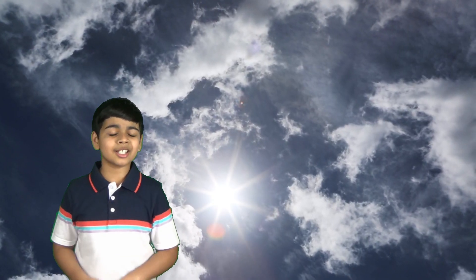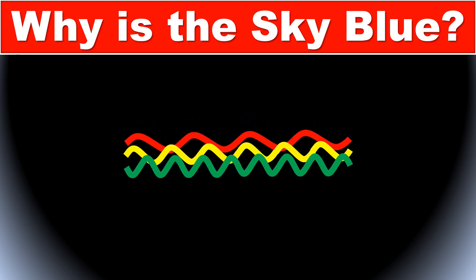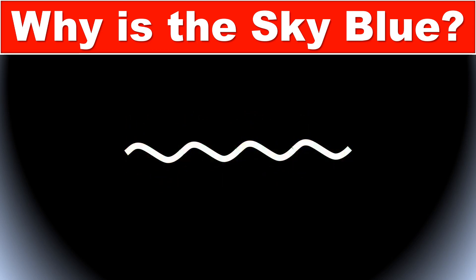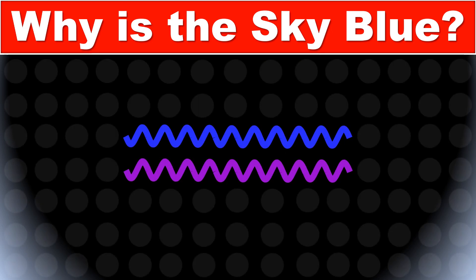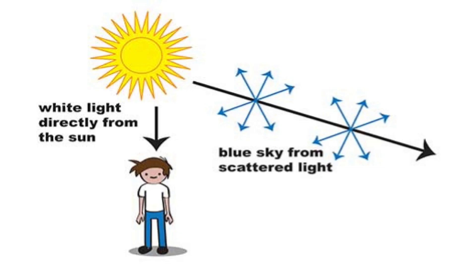And what happens is that most color wavelengths, like red, yellow, and green, just pass straight to your eyes, mixed together as a mostly white color, maybe a little bit yellow. But the shorter wavelength colors, blue and violet, are just the right size to hit and bounce off the air particles in the atmosphere.